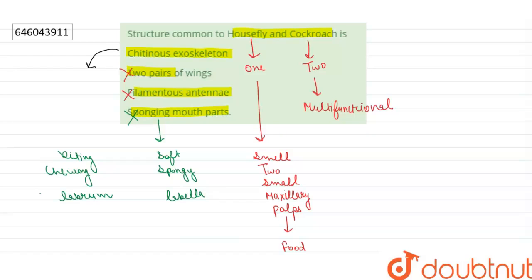If we talk about option one, chitinous exoskeleton: it is present in both housefly and cockroach. Chitin is a tough semi-transparent substance that is the main component of the exoskeleton of arthropods. So the right answer of our question will be option number one. Thank you.